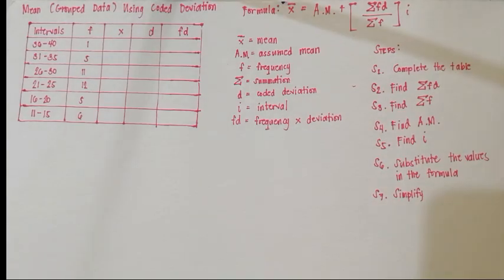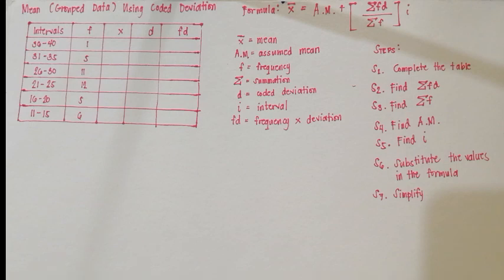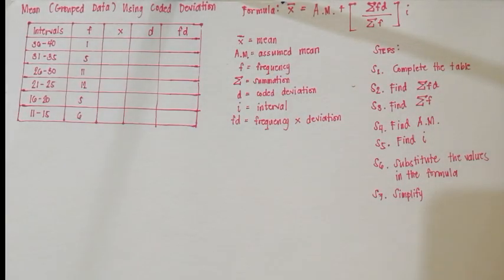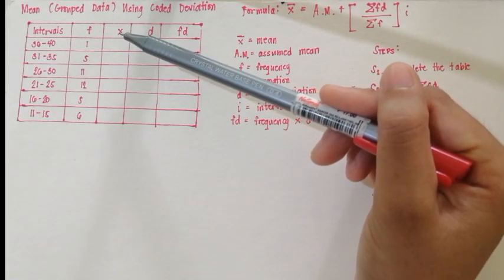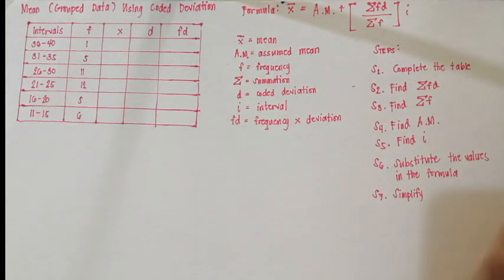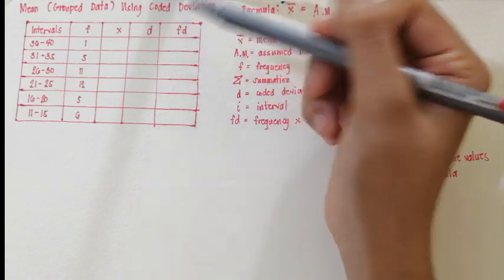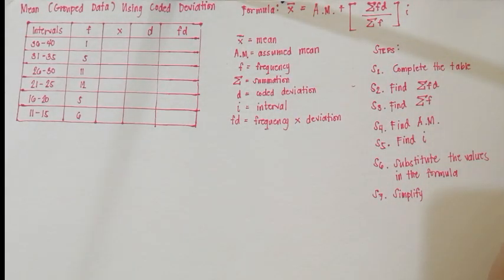Let's proceed to our example. As you can see, our given table here is just the same as the first one. I'm going to use the same table to check whether this method gives the same answer as the first method. We again have the column for the interval, the column for the frequency, the column for the class marks or X. But we don't have the column for FX anymore. Instead, we have the column for D, which means coded deviation, and then FD, which means we multiply frequency and deviation.